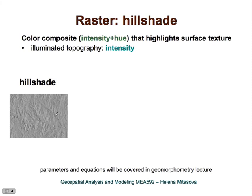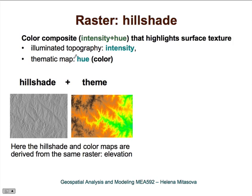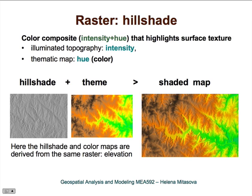Now let's look at raster hillshade. Hillshade is another nice tool to display the relationship between topography and a certain theme. It is essentially a color composite where illuminated topography is used for intensity — we'll talk about how that's computed in a geomorphometry lecture. We then use our theme for color, which is combined as hue with the intensity, producing a shaded map that highlights topographic structure through both shading and color. Here we have both the theme and hillshade based on the same elevation map.